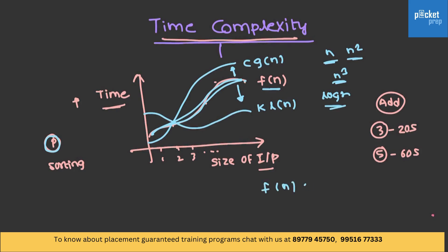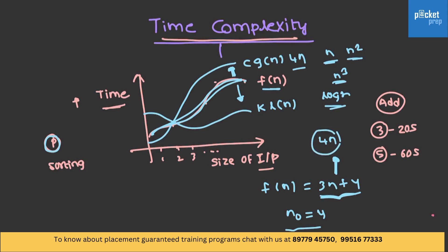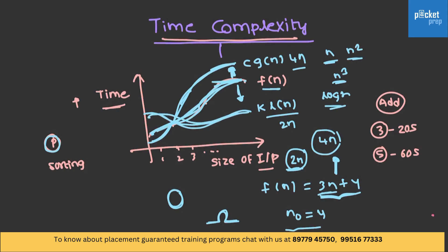If you have taken f(n) = 3n + 4, and if you take 4n, then after a value n₀ = 4, 4n will always be greater than 3n + 4. So 3n + 4 can be estimated as 4n. We are trying to take a function which is always greater after a specific limit — this is the worst case. The worst case complexity can be represented with Big O notation. If you take 2n, then 3n will always be greater than 2n, so 3n can be represented with Omega notation using 2n. Big O represents the worst case — even though the time taken is less, we take a standard bound which is above. In the case of Omega (best case), even though the time taken is more, we take a standard function which is much less than the time taken by our program.